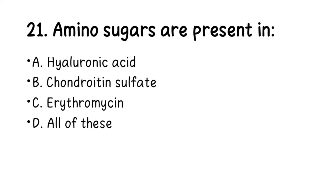Number 21. Amino sugars are present in: A. Hyaluronic acid, B. Chondroitin sulfate, C. Erythromycin, D. All of these. The right answer is all of these — you can find amino sugars in all of them, from A to C.